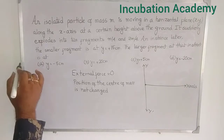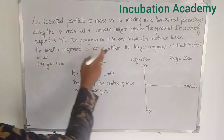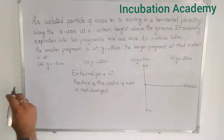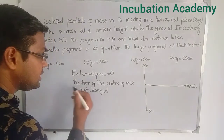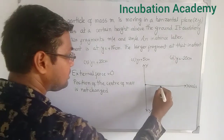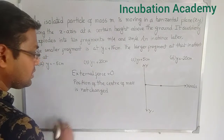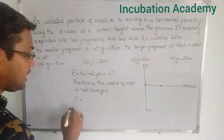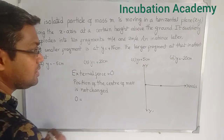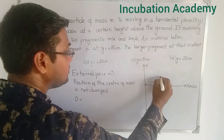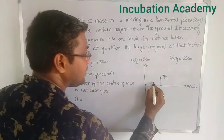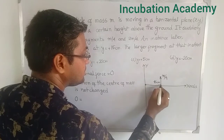After the explosion, it breaks up into fragments m/4 and 3m/4. At an instance later, the smaller fragment is at y = 15 centimeters. Since the center of mass position is not changed, let us consider the explosion occurred somewhere here on the x-axis where y = 0 before the explosion. The particle m/4 is somewhere at a distance of +15 centimeters along the y-axis.